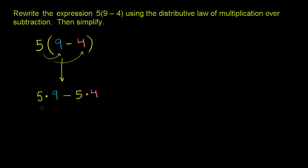But anyway, what are these things? So 5 times 9, that is 45. So you have 45 minus, what's 5 times 4? Well, that's 20. 45 minus 20, and that is equal to 25.